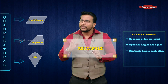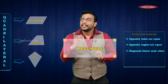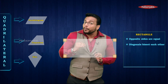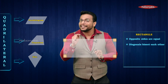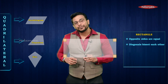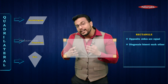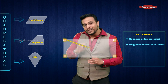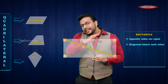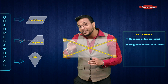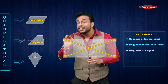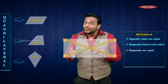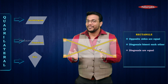In a rectangle we have each angle equal to 90 degrees. The properties are: opposite sides are equal, diagonals bisect each other, and there is one additional property — observe the two diagonals carefully, their lengths are equal. So the third property is: diagonals are equal.